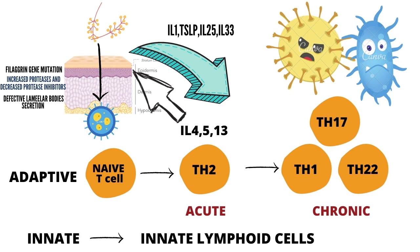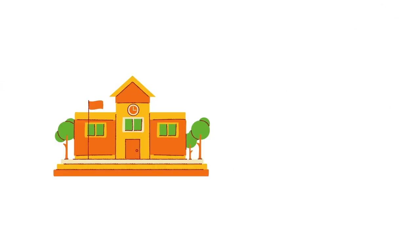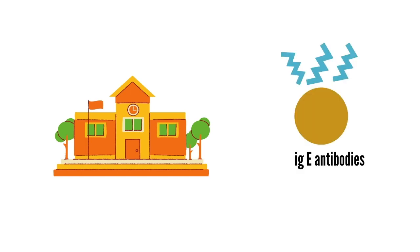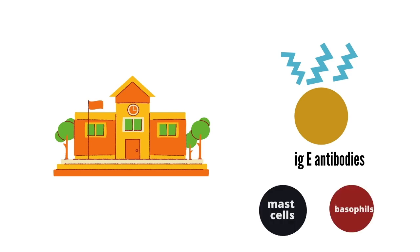As a result of epidermal barrier dysfunction, TH2 response, and altered skin microbiome, there is inflammation in the skin and increased transepidermal water loss, leading to dry and inflamed skin. Now, recall the classic mechanism of atopy from medical school: after exposure to an antigen, IgE antibodies are produced and bind to mast cells and basophils. When the allergen re-enters, it binds to IgE on mast cells, causing immediate histamine release and a delayed response mediated by leukotrienes and prostaglandins.